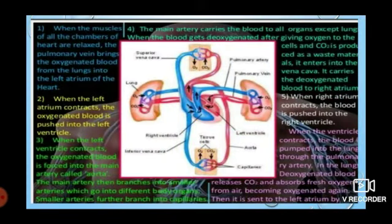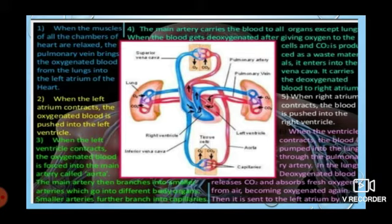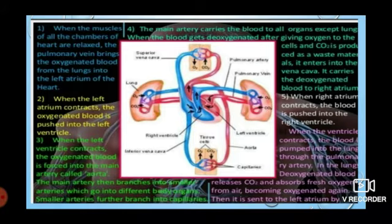This is the detailed study of the function of the heart. When the muscles of all the chambers of the heart are relaxed, the pulmonary vein brings oxygenated blood from the lungs to the left atrium. When the left atrium contracts, oxygenated blood is pushed to the ventricle. When the left ventricle contracts, oxygenated blood goes to the main artery called the aorta. The main artery then branches into smaller arteries.